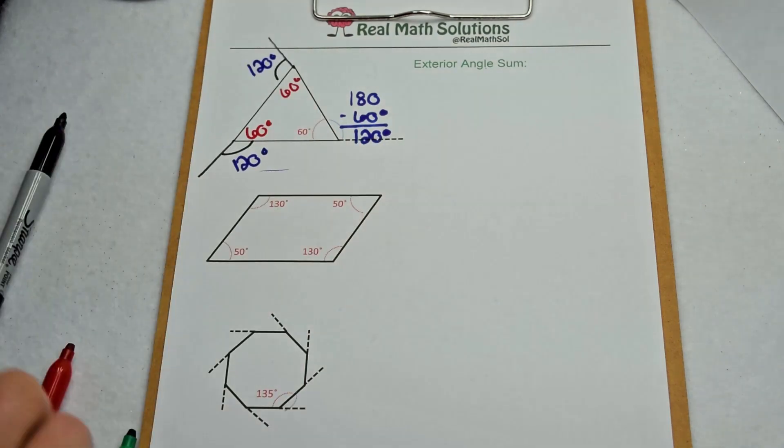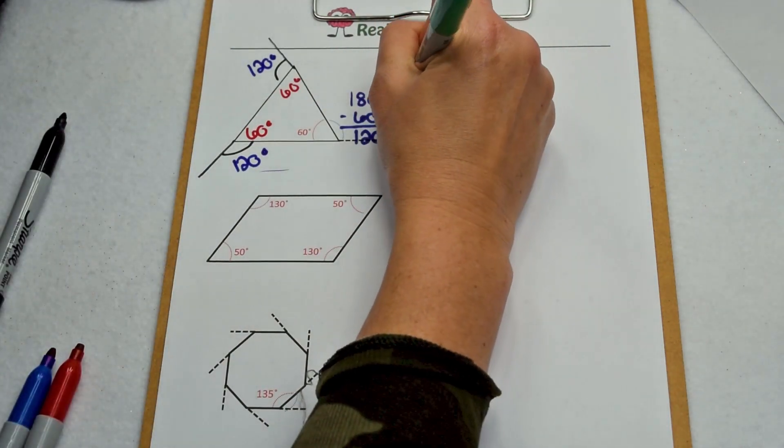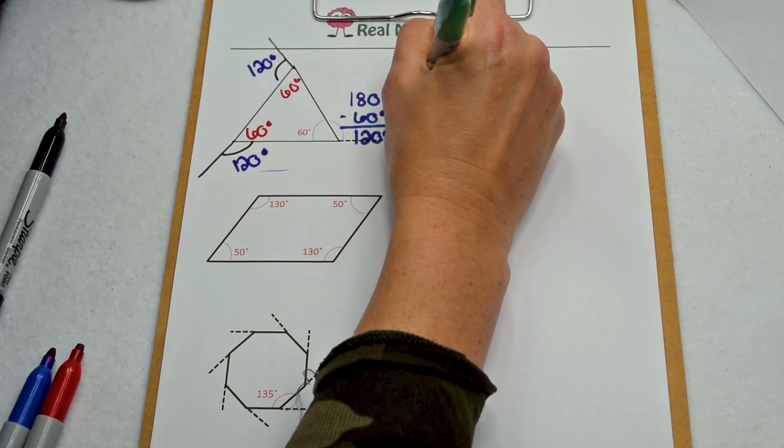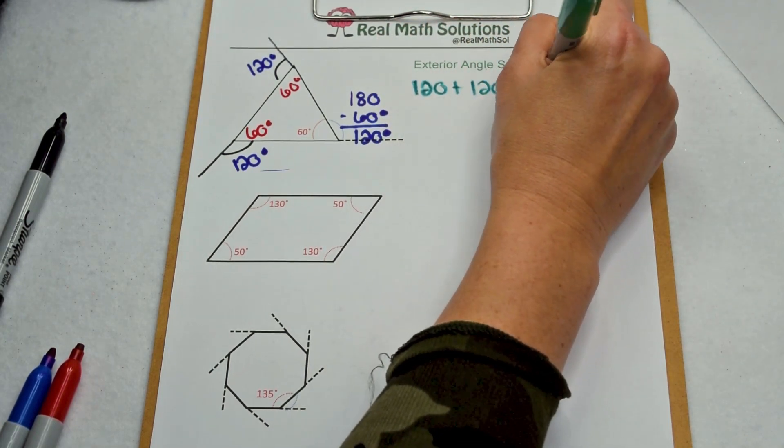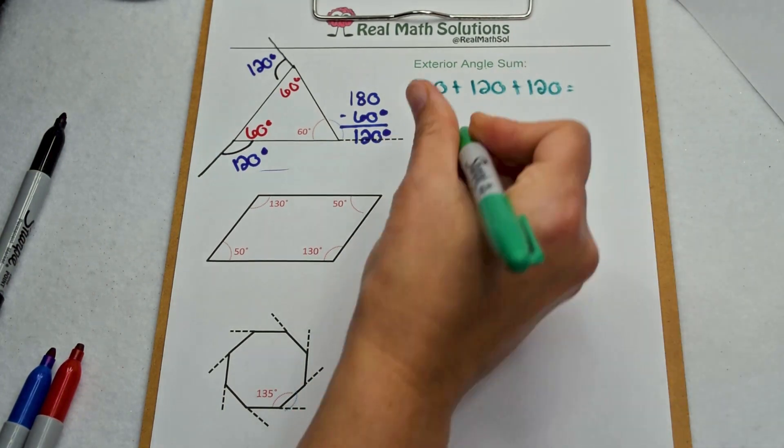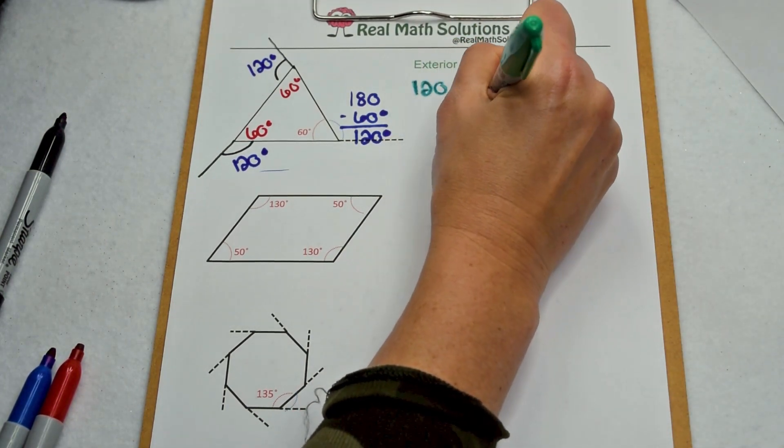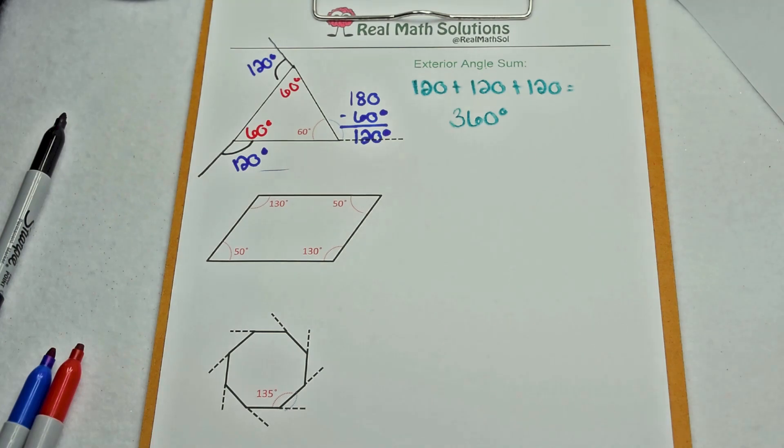Now that we know what all of our exterior angles are, we can find our exterior angle sum. We have three exterior angles worth 120 degrees each. So when we add 120 plus 120 plus 120, that comes out for a total of 360 degrees.